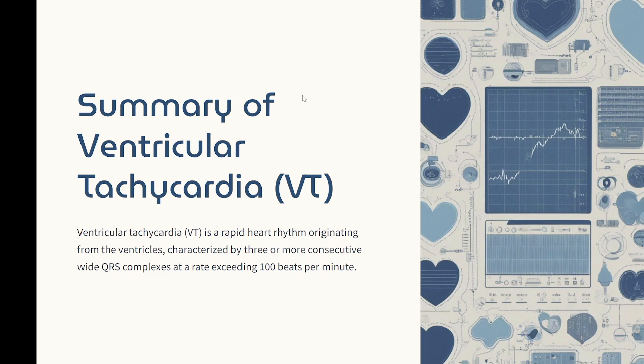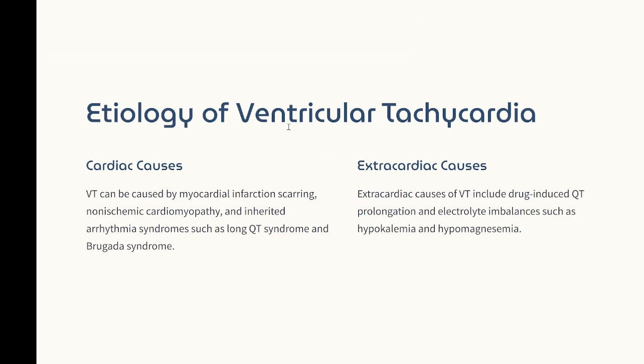Summary of ventricular tachycardia. Definition: ventricular tachycardia is a rapid heart rhythm originating from the ventricles, characterized by three or more consecutive wide QRS complexes at a rate exceeding 100 beats per minute. Etiology — cardiac causes: myocardial infarction scarring, non-ischemic cardiomyopathy, and inherited arrhythmia syndromes such as long QT syndrome and Brugada syndrome. Extracardiac causes: drug-induced QT prolongation and electrolyte imbalances such as hypokalemia and hypomagnesemia.